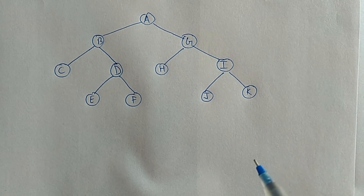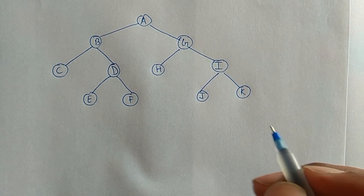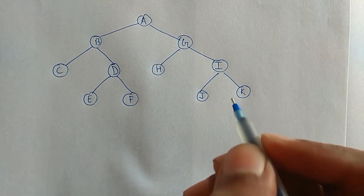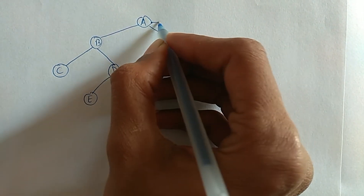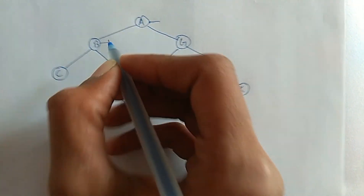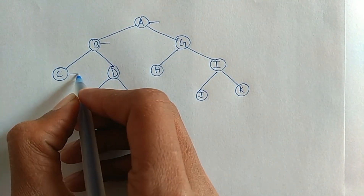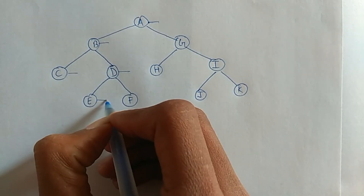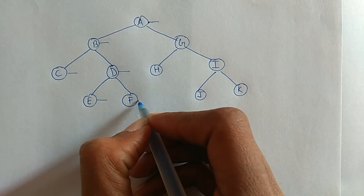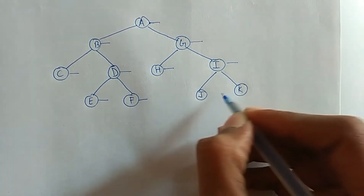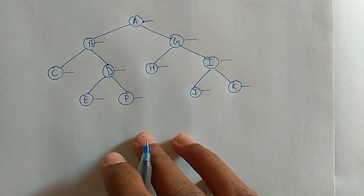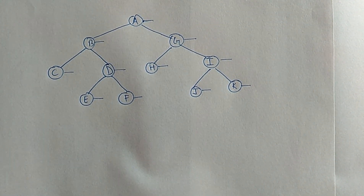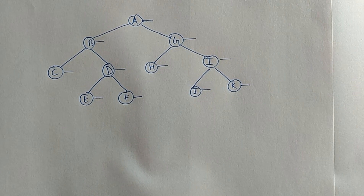Now to calculate the post-order of this tree, again write the right line on each node, as in the previous one but this time on the right side. Now I will start traversing from node A.